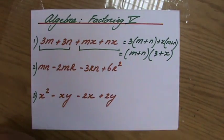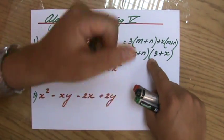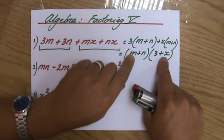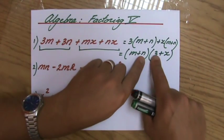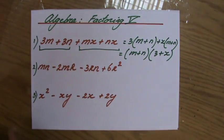I check my work always, because I want to make sure I'm correct. So I expand my answer, then I should get my question. m times 3, 3m. m times x, mx. n times 3, 3n. n times x, nx. Fantastic. Moving on.